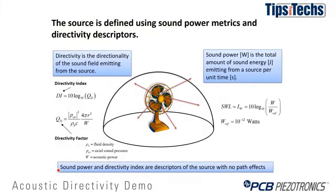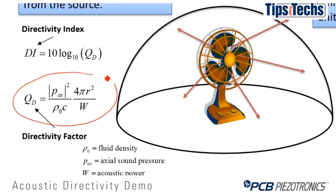The first thing we'll be doing is talking a little bit about theory. There are two metrics required to fully define an acoustic source: its sound power level and its directivity. The directivity factor is the ratio of the squared pressure of the source at some angle to the squared sound pressure generated from a monopole or omnidirectional source with the same sound power level as the given source, and that's the equation you see right here. The directivity index, noted DI on the slide, is simply 10 times the base-10 logarithm of the directivity factor Q sub d.